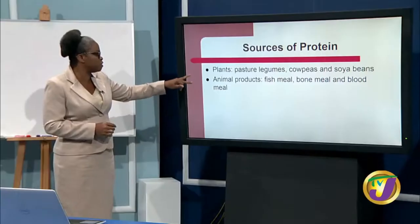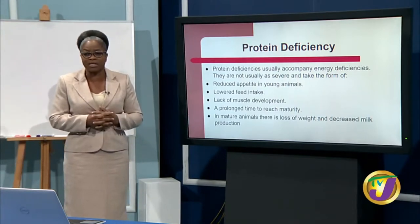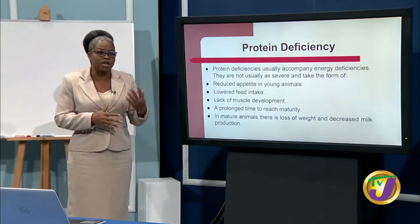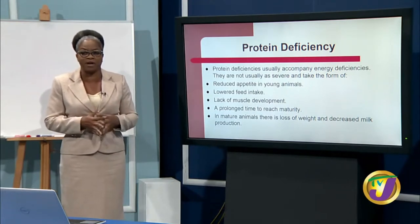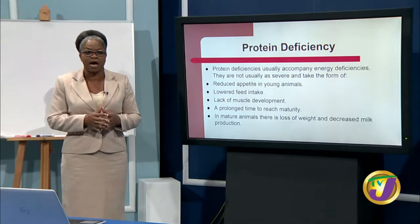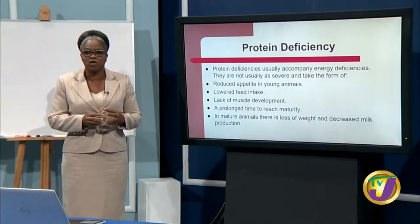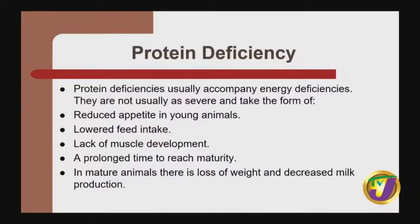Like energy, protein deficiency can also be present in animals if they are malnourished. If young animals are not getting enough protein, we will see reduced appetite, lower feed intake, lack of muscle development, and a prolonged time to reach maturity. In mature animals, there is loss of weight and also decreased milk production.